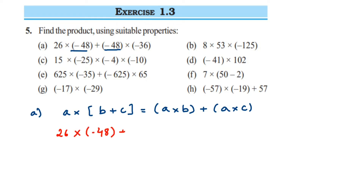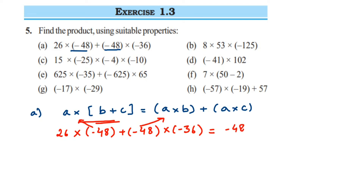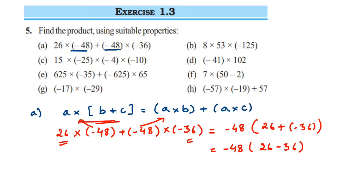The question is 26 multiplied by minus 48, plus minus 48 multiplied by minus 36. Taking minus 48 outside, we substitute: a is minus 48, b is 26, c is minus 36. So it becomes minus 48 into 26 minus 36. Now 26 minus 36 gives minus 10. Multiply: minus 48 into minus 10 — minus times minus is plus — giving plus 480.